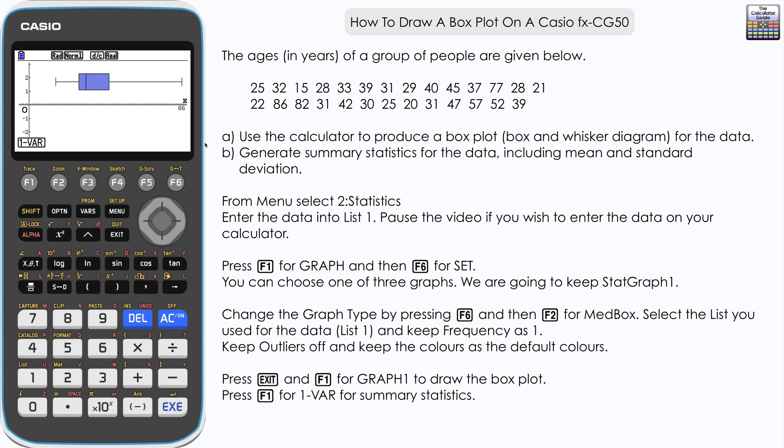Now to answer part B, we need to generate some summary statistics for the data. Well if we press F1 for one var or one variable, then we can see that we've got the summary statistics generated here. At the top we have x-bar, which is the mean, 38.6 recurring I believe that is. We've got sum of x and sum of x squared.